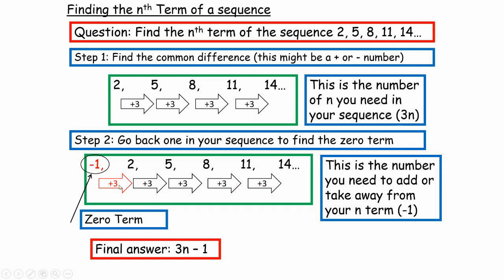If the zero term was 7, I would put 3n plus 7. If it was 9, I'd put 3n plus 9. If it was minus 4, it would be 3n minus 4. If the sequence went down in threes, I'd put minus 3n. But it's always going to work out this way.